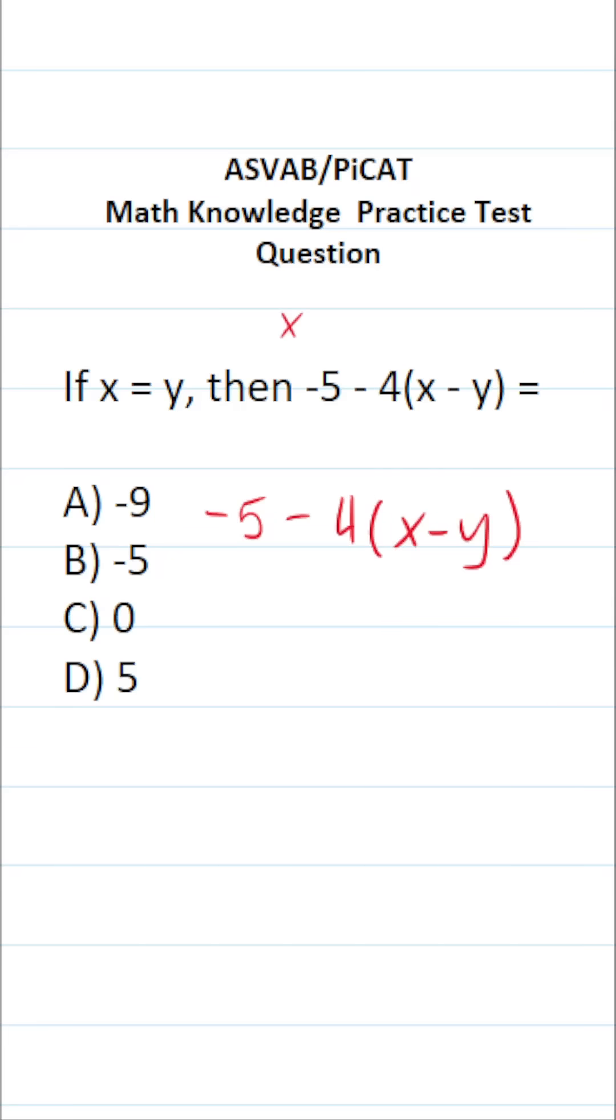In this case, we're told x equals y, but we're not told what either of those values are. So I'm going to pick any value that I want. I'm going to say x is 2, because 2 is pretty easy to work with. That means y is also going to be 2.